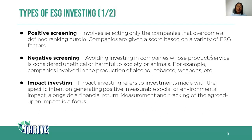Starting off, there is positive screening. This involves selecting only the companies that overcome a defined ranking hurdle. Companies are given a score based on a variety of ESG factors, and the companies that achieve that score are the ones put into that ESG fund. A shortfall of this method is that there is no defined way of giving a score — one fund manager might give a high score for climate change, another for social factors like gender equality. It's very subjective and does not follow a universal definition.